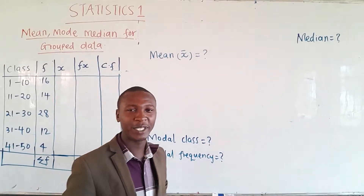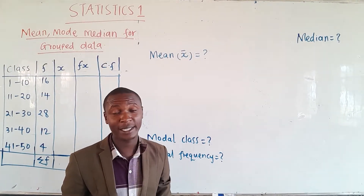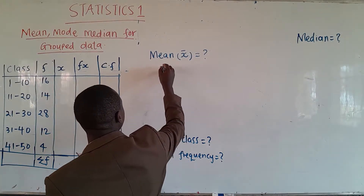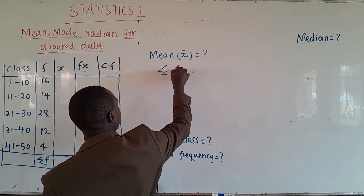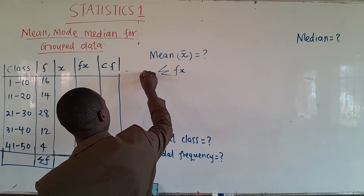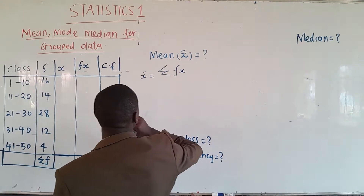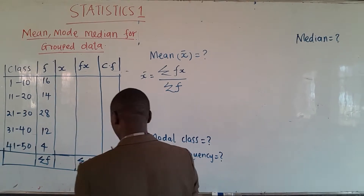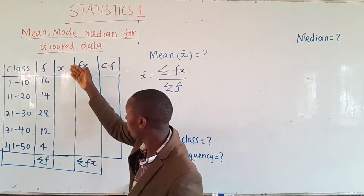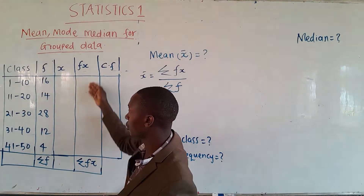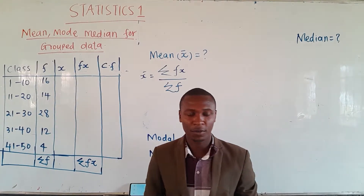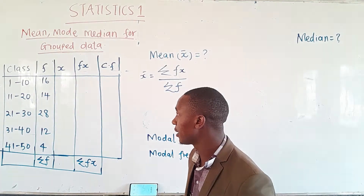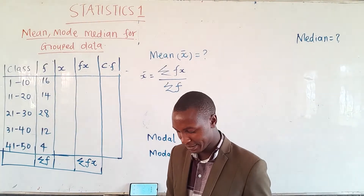To work out the mean, first we need to write down the formula. To find the mean: x̄ = Σfx ÷ Σf. So we need the column for x to be filled and the column for fx to be filled. To do that, I need a calculator.